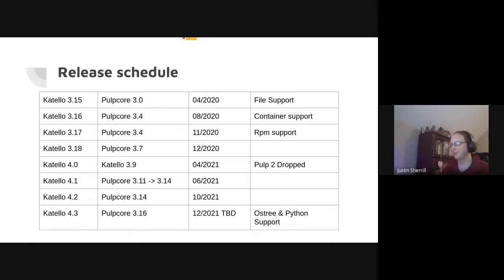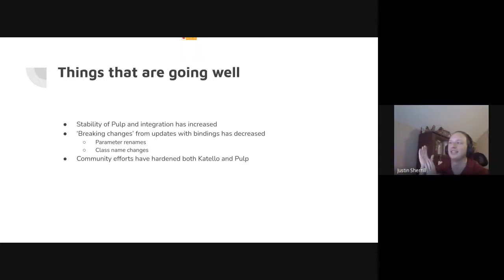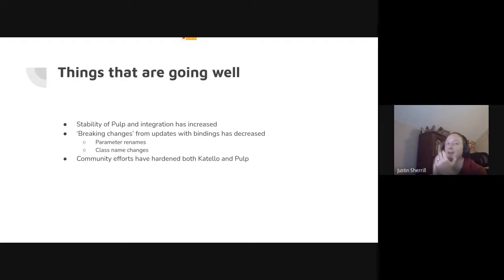First, I want to start off with some things that are going well. The stability of Pulp and the integration points that we have has definitely increased. We aren't seeing nearly as many breaking changes as we used to. The Pulp 3.15 and 3.16 upgrades have been almost hands-off. We were seeing a lot of class name changes in the client bindings, parameter renames, things like that, and we're seeing those decrease as time goes on. This reduces the time we spend integrating new releases and getting them to our users faster.